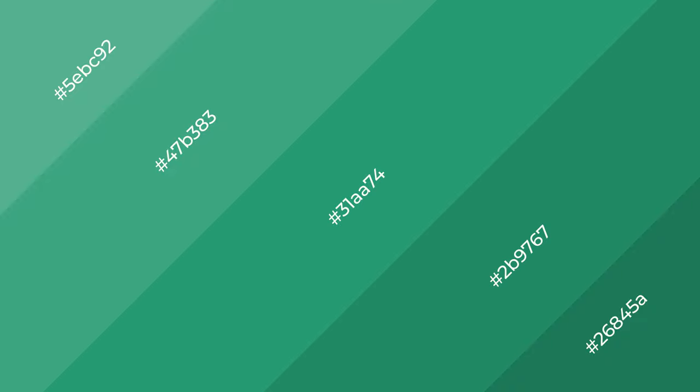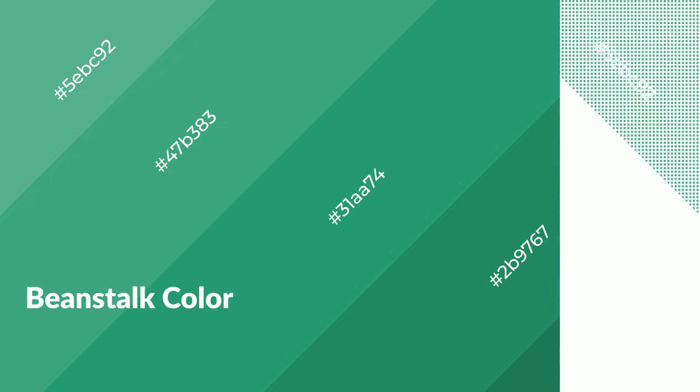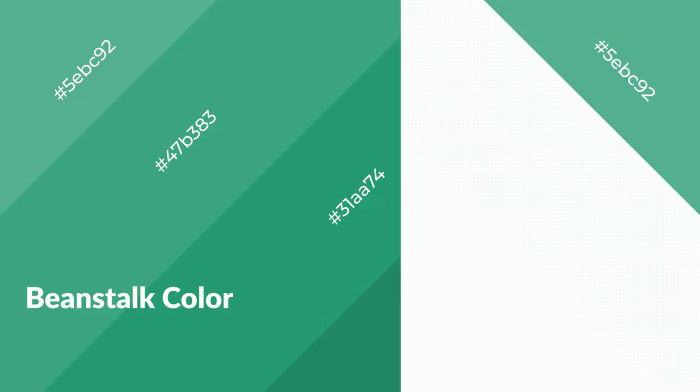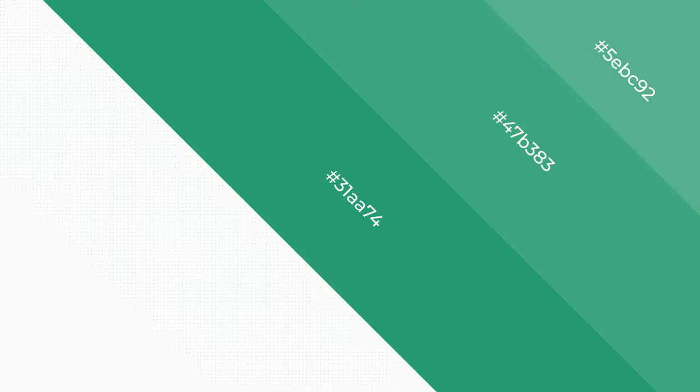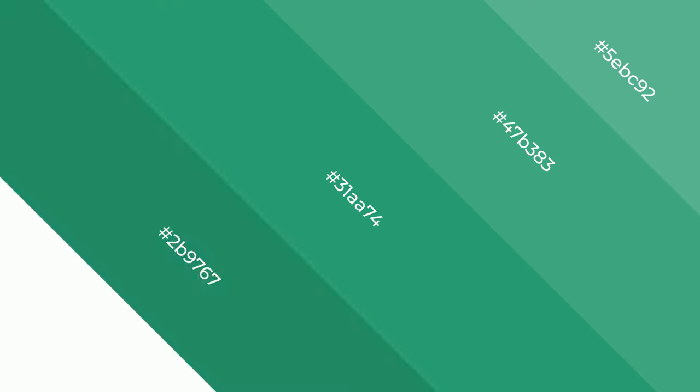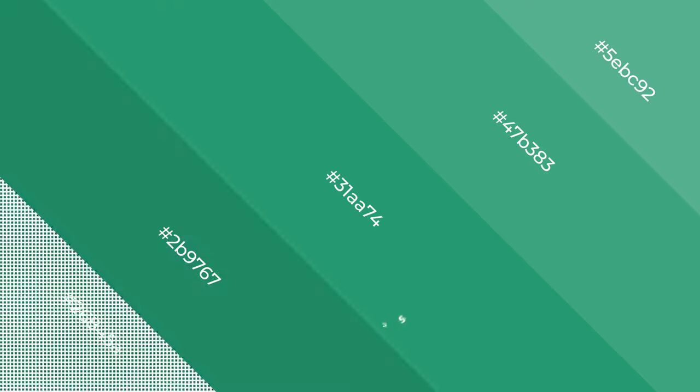Layers and shades create depth and drama. Beanstalk is a cool color, and it emits calming, serene, soothing, refreshing, spacious, unwinding, peace, and relaxed emotions.